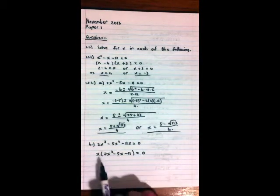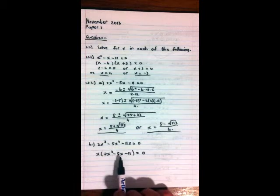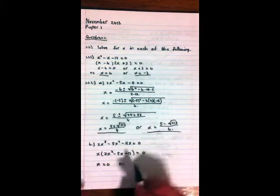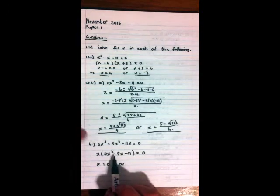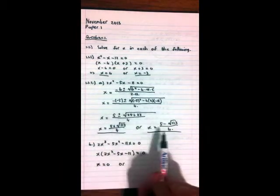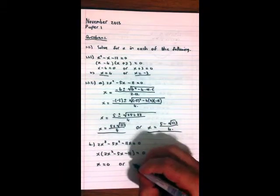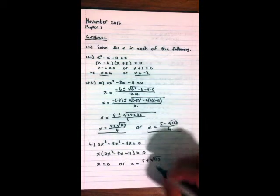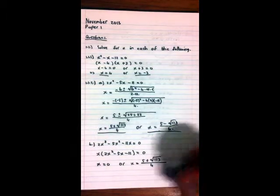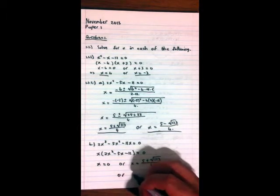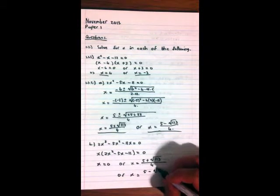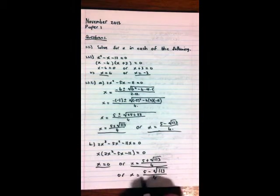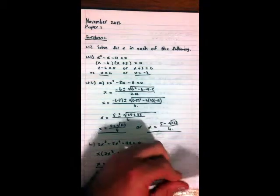Again, we've got something times something equals 0, so either this has to be 0 or this has to be 0. So we have that x = 0 or this has to be 0. And if this is 0, we've calculated all this already, so it's either that one or that one. x = (5 + √113) / 4 or x = (5 - √113) / 4. And there you go, your answer.